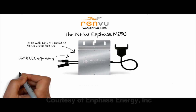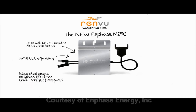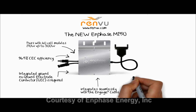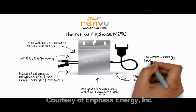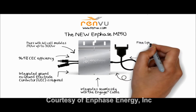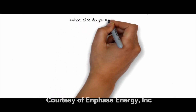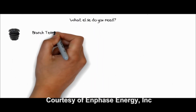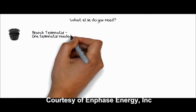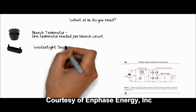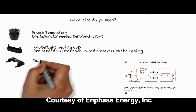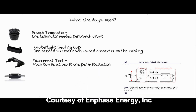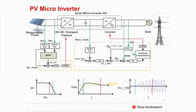Next, I will introduce a product, the M250 from Enphase. It has 60-cell modules and a very high efficiency. Besides, its ground has been integrated into the product. As shown in the topology of the product, it is clear that it has an interleaved network, which consists of two flyback converters in parallel to meet the power requirements.